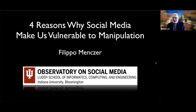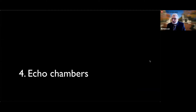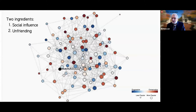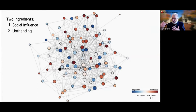Let's start with number four: echo chambers. We've all heard a lot about echo chambers, but a good way to illustrate what I mean is to show a simplified model of a social media network. The nodes here are people, and the connections are like when you follow somebody on Twitter or friend them on Facebook or Instagram. People have feeds and you can post something to your feed or look at what your friends have posted and reshare it.